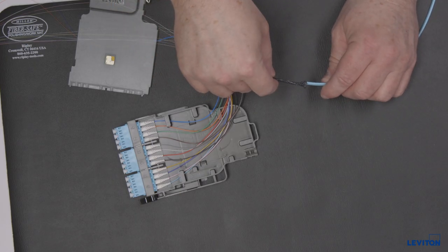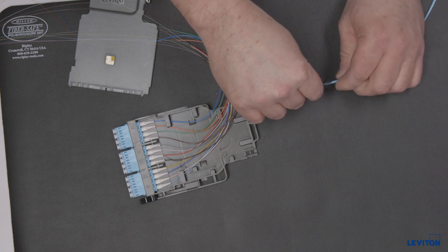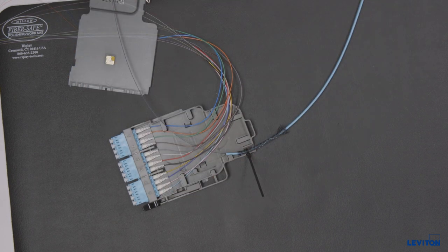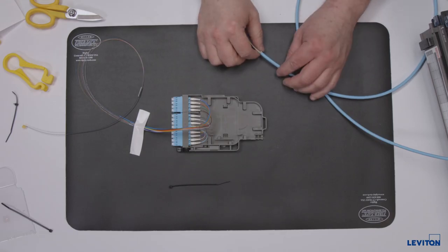When using ribbon fiber in a flat furcation tube, install a short piece of mesh tubing onto the furcated ribbon fiber for securing at the tie-down point. Remove at least 35 inches of outer cable jacket from the entrance point to the splice module.